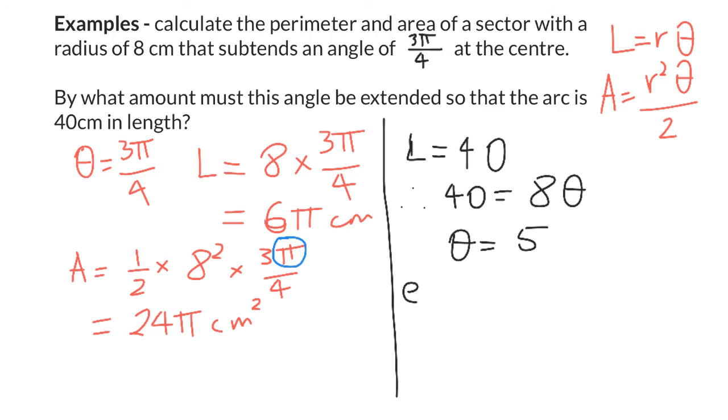So that my extension would be 5 minus what I've already got, 3π over 4. I'm going to turn that into a single fraction, which is 20 minus 3π all over 4.